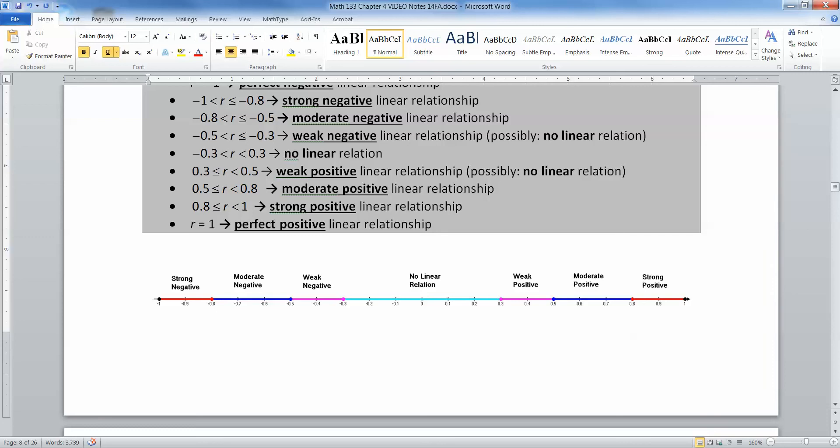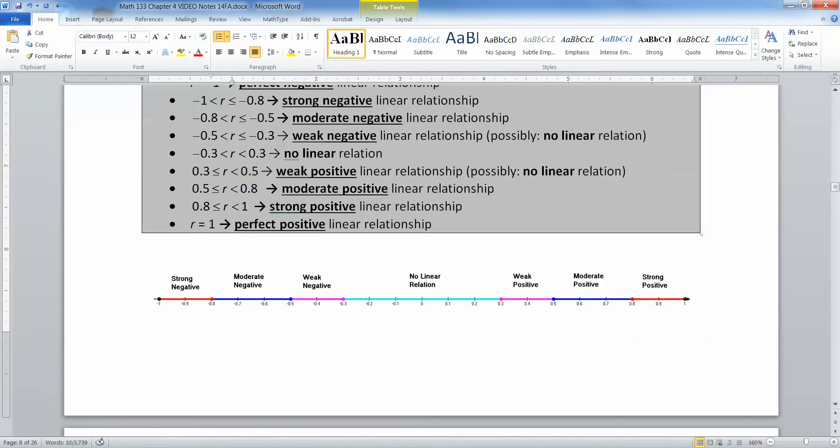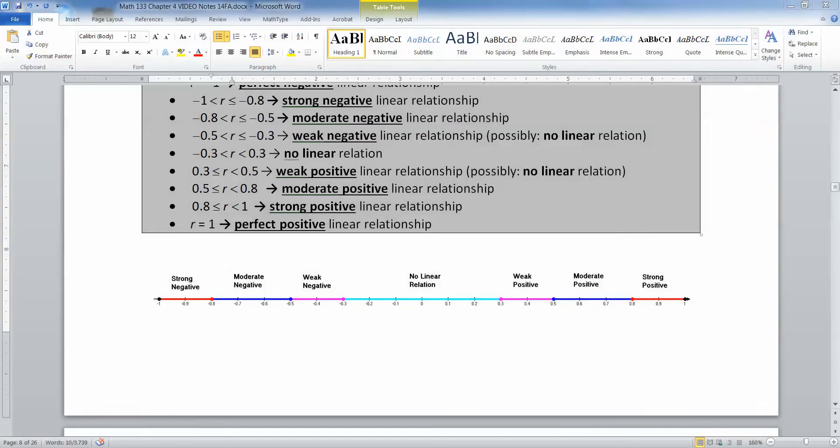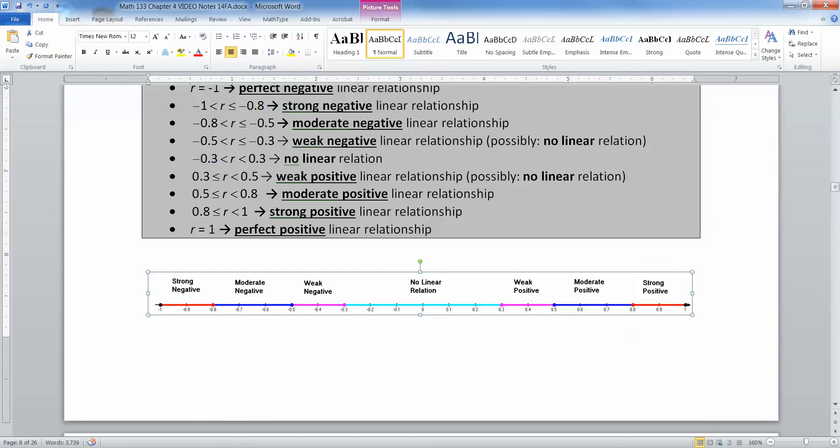Negative 0.799 is in the moderate, but negative 0.8 starts the strong. Then you have your weak, which are the magenta colored, and then your no linear relation in the middle, which is that aqua color. When you look at this, keep in mind that you can be strong two different directions. You can have strong negative or strong positive, but both of them are on the edges. Being close to 1 or negative 1 makes it strong. Being in either red zone makes it strong. Being in the blue zone, either side is moderate. If you're on the right-hand side, it's moderate positive. If you're on the left-hand side, it's moderate negative. Same thing with the weak. Either direction, it's fine. You have to pay attention to whether you're on the positive or negative side.